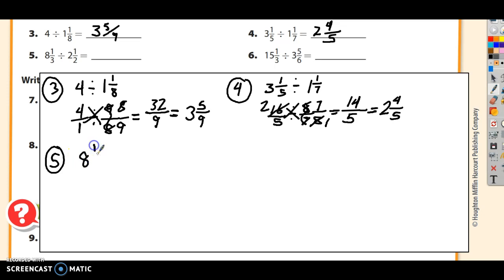Number 5. 8 and a third, divided by 2 and a half. 8 and a third is 24, plus 1 is 25 thirds. 9 and a third, divided by 2 times 2 is 4, plus 1 is 5 halves. Now multiply the reciprocal. I could do 2 times 25 and 3 times 5, but I'd rather simplify. 5 and 25 share a factor of 5. 5 goes into itself once. 5 goes into 25 five times. Now I've got 5 times 2 is 10, over 1 times 3 is 3. 10 divided by 3 is 3 whole. 3 times 3 is 9, so that's 1 remaining, over 3. 3 and 1 third.